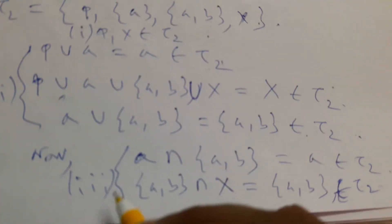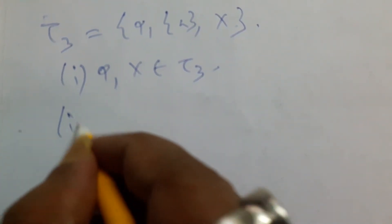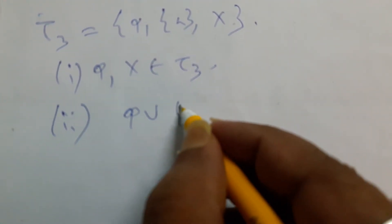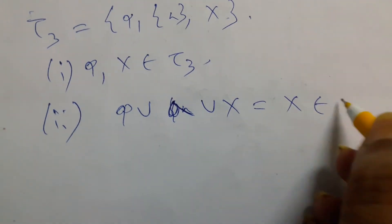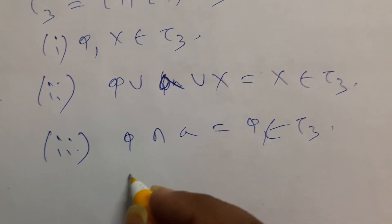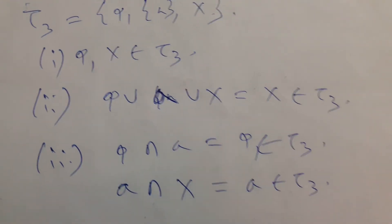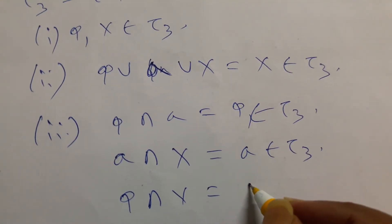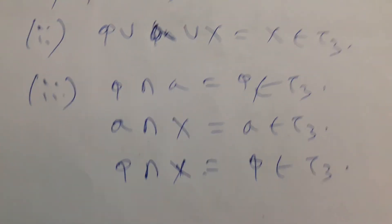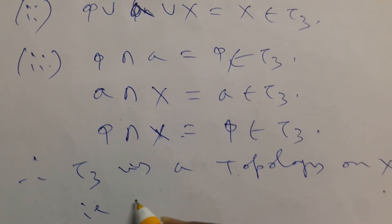For tau three — {phi, {a}, X} — the trivial cases phi and X both belong to tau three, so condition one is satisfied. For condition two: phi union {a} = {a}, and {a} union X = X, both in tau three. For intersection: {a} intersection X = {a}, and phi intersection anything is phi — both in tau three. So tau three is a topology on X and (X, tau three) forms a topological space.